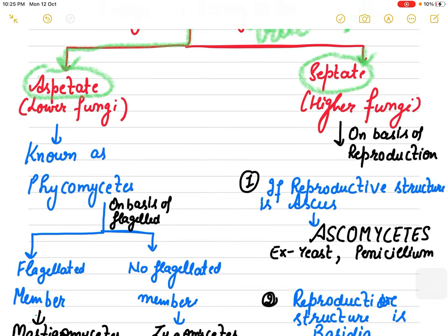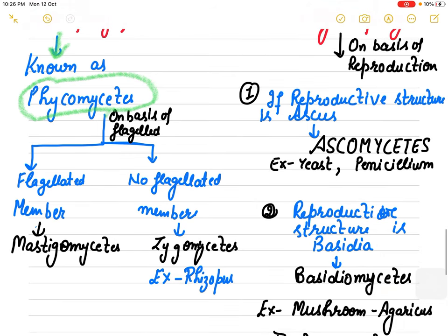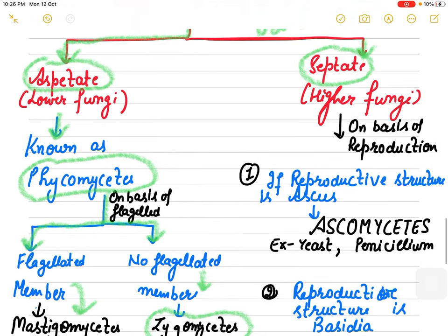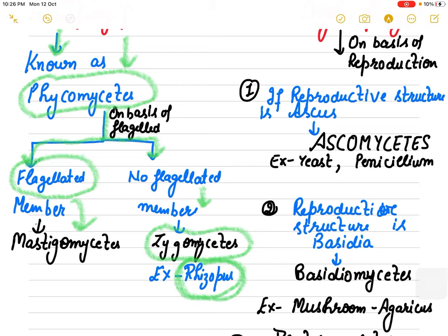Lower fungi are known as Phycomycetes and Phycomycetes are further divided into two on the basis of flagella. If any member or any part has flagella it is known as Mastigomycetes. If it does not have any flagellated member then it comes in the group Zygomycetes. A common example is Rhizopus which doesn't have flagella. So aseptate fungi are known as Phycomycetes which is further divided as flagellated and non-flagellated - if flagellated member is present it is Mastigomycetes, if no flagella it is Zygomycetes.